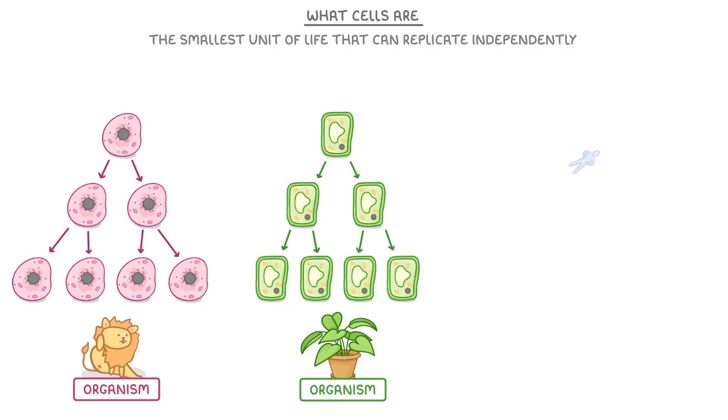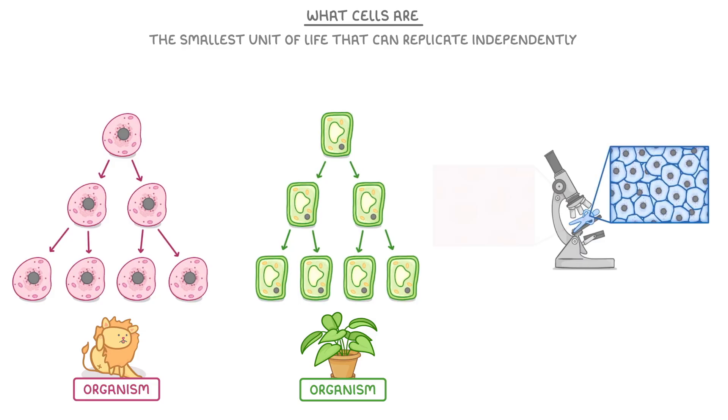To see what I mean, imagine we took a human and looked at him closely under a microscope. We'd see that he's made up of cells, so the skin contains skin cells, the blood contains blood cells, and so on. Overall we've got loads of different types of cells, and it's estimated that an adult contains over 40 trillion cells altogether.